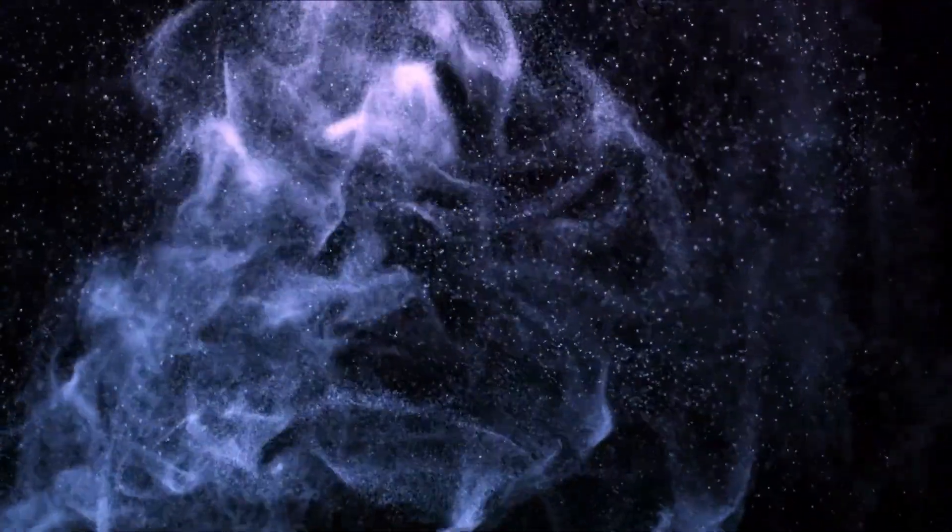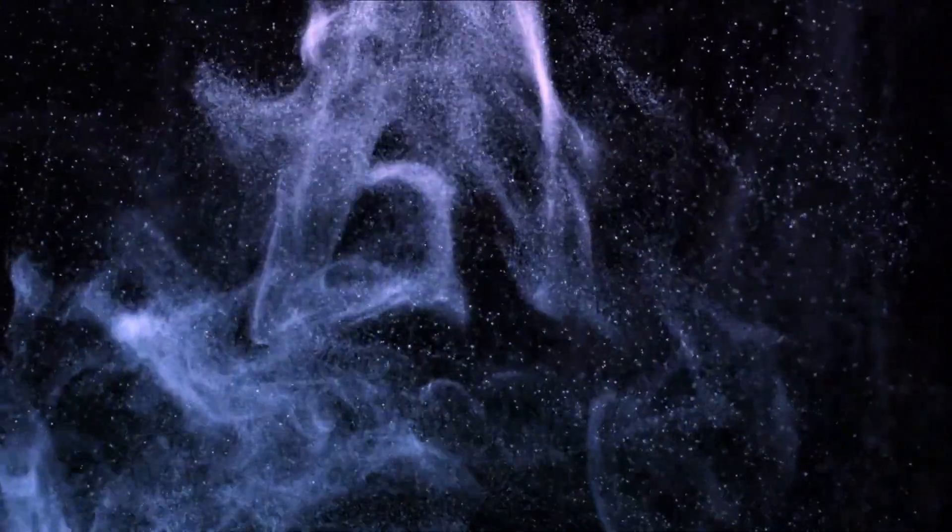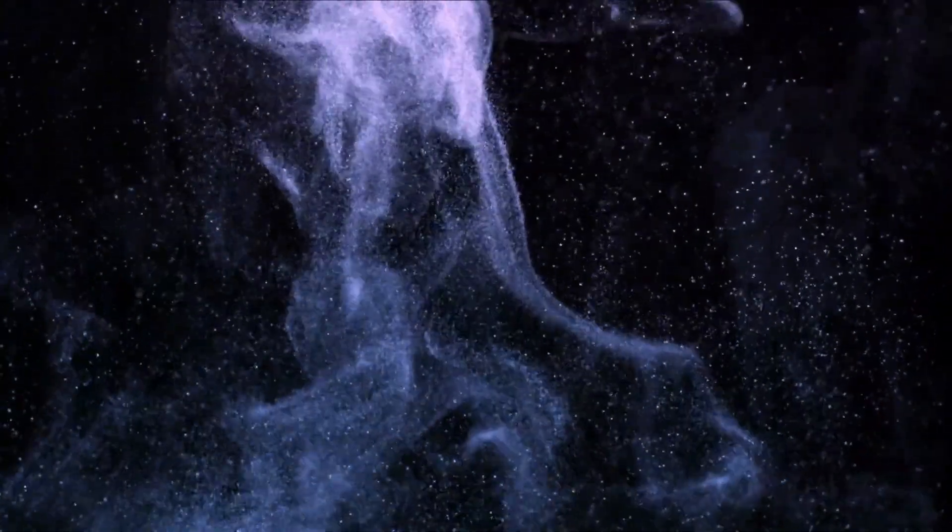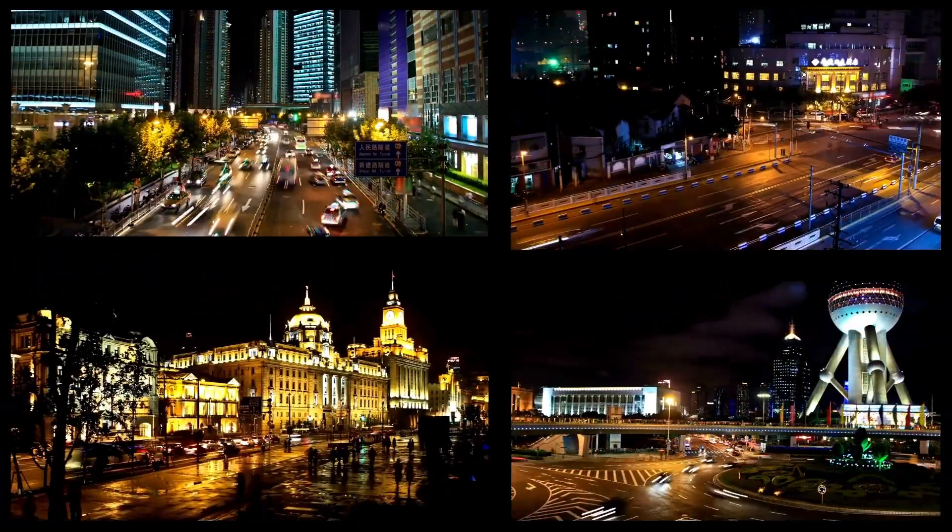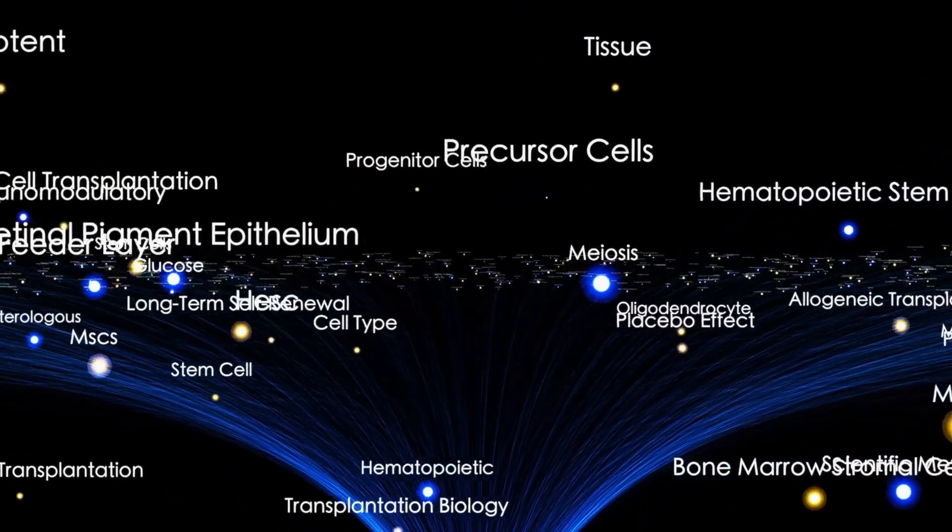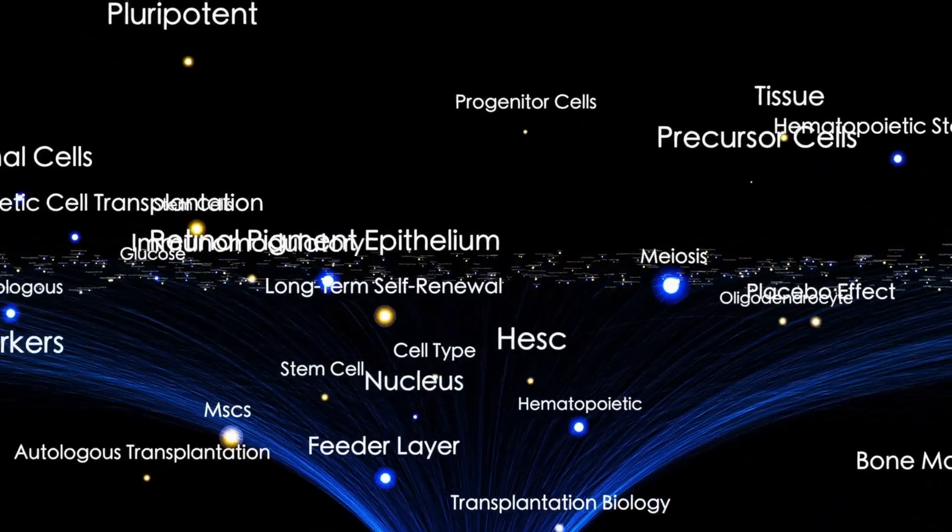Officially, this was to ensure coordinated observation. Unofficially, it was panic. Scientists from Caltech and the University of Tokyo began comparing 3.I Atlas' acceleration pattern to known artificial propulsion systems.